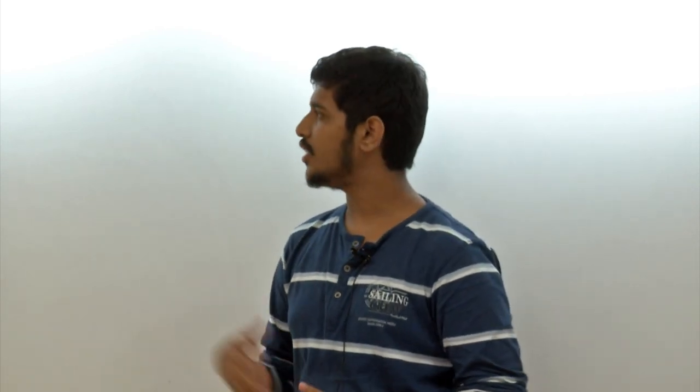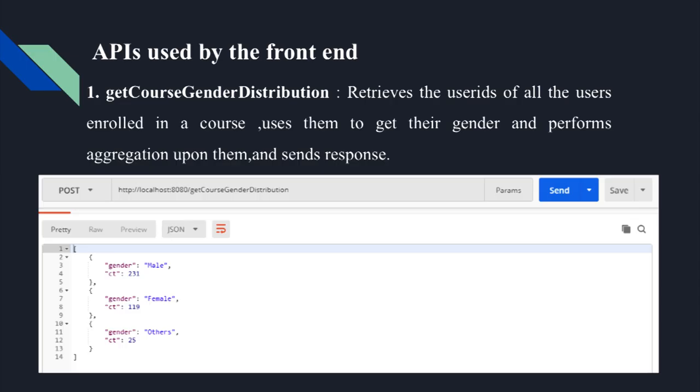Since Node.js is asynchronous, before we could even fetch the data it was pre-processing and we were getting null responses. We managed to achieve synchronous-like behavior in an asynchronous environment using callbacks — function inside function inside function, going multiple levels deep until we get the required response. The first API is getCourseGenderDistribution: based on the course ID, it checks the course enrollment, gets the user ID of each enrollee, uses that to determine gender, and performs aggregation, returning an array of JSON objects with gender type and count.